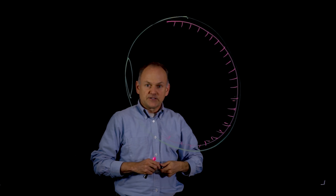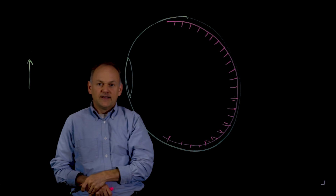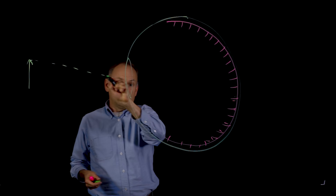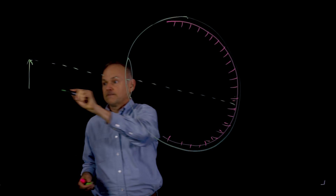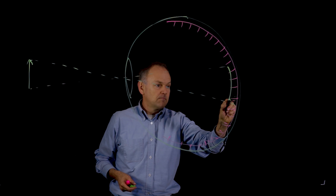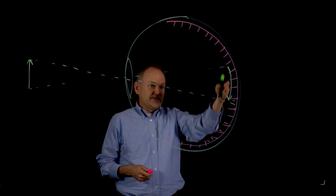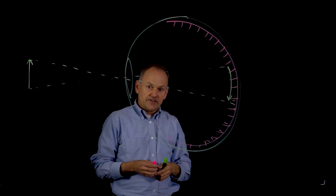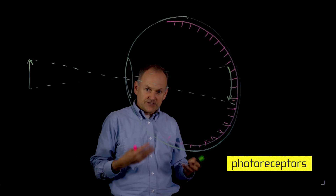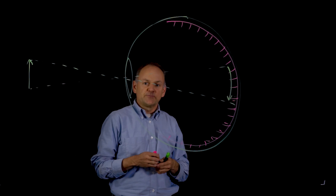When we look at an object in the world, the image is projected onto the back of the eye. The shape of the object is then sensed by the photoreceptors, but the brain does not actually get to see the output of the photoreceptors itself — it does not get to see the raw retinal image.